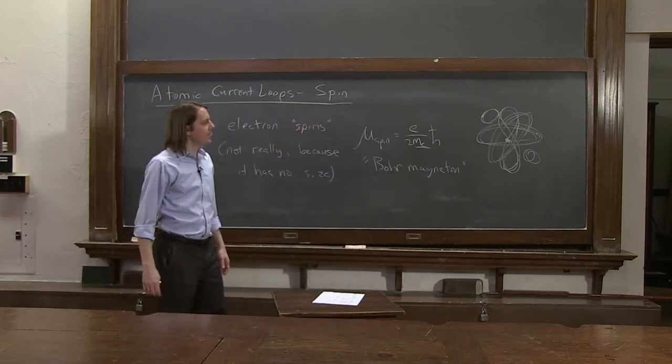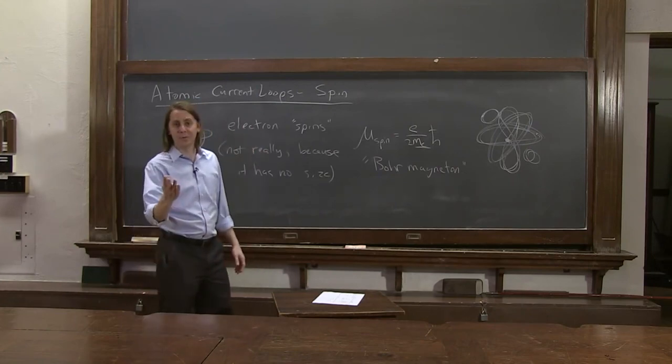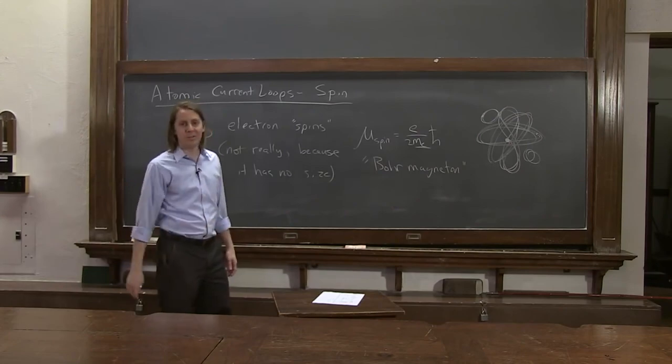So it would seem then that all this big jumble together, you wouldn't get much magnetism in matter. And usually you don't. But let's now talk about the three kinds of magnetism you can see.